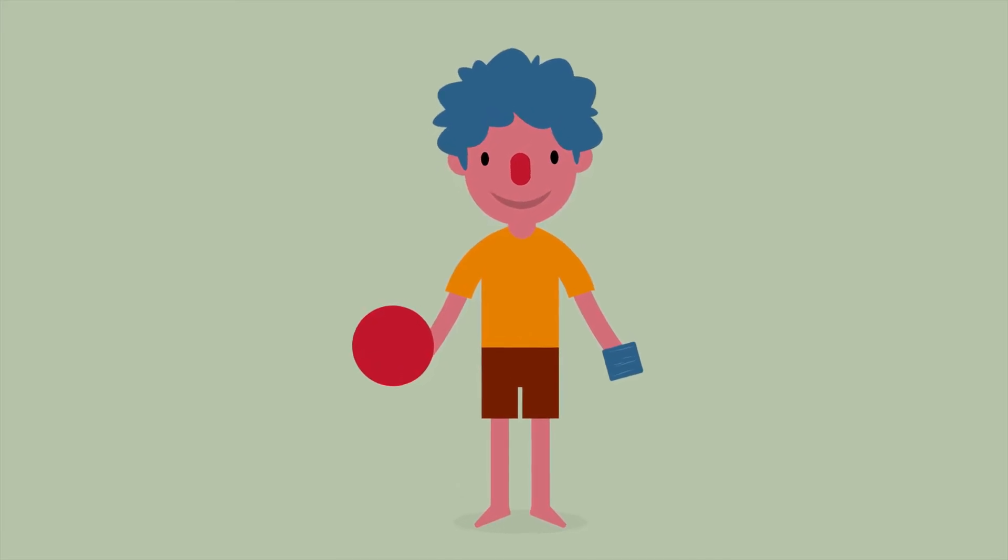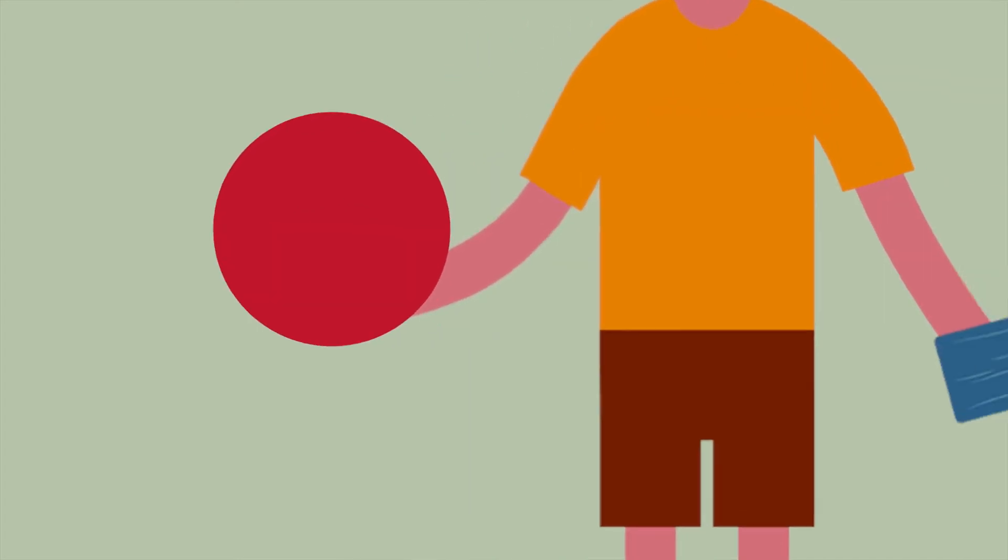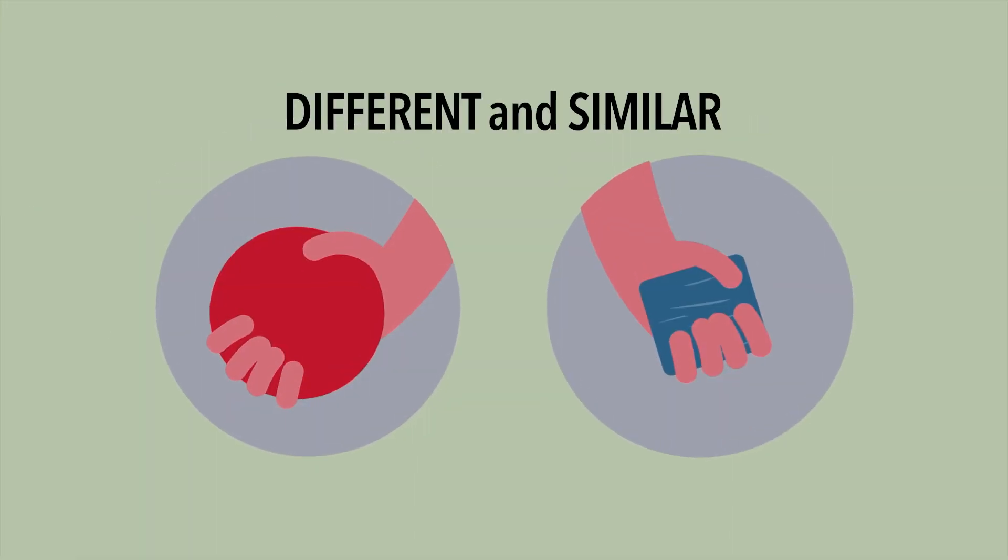Hi kids! Look at what I have in my hands. This one is a big red ball. This one is a small block of blue wood. They're different and similar, right?